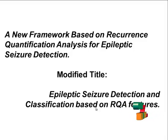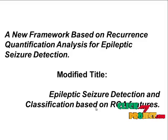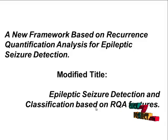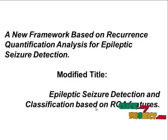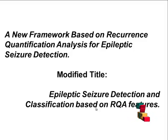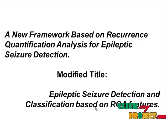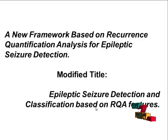The subbands are delta, theta, alpha, beta, and gamma for epileptic seizure detection. RQA is adopted since it does not require assumptions about stationarity, length of signal, or noise. It also does not require additional assumptions about the signal.